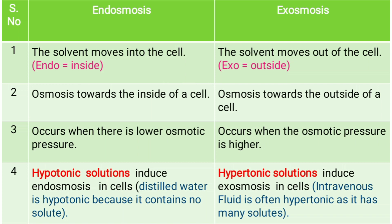Third difference: endosmosis occurs when there is low osmotic pressure — meaning the osmotic pressure is low. Exosmosis occurs when the osmotic pressure is high.